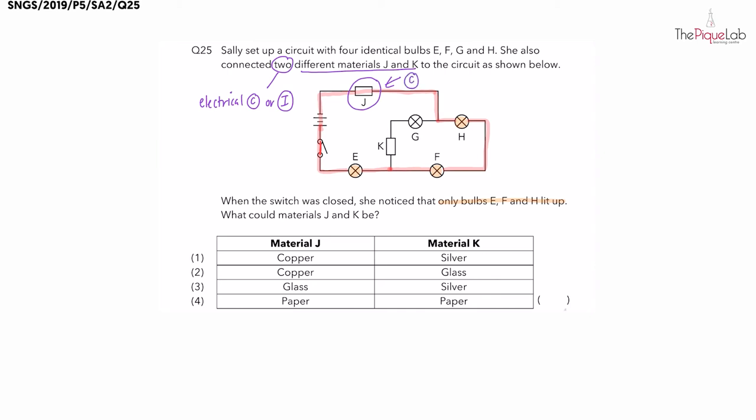What about material K then? Did any electricity flow through material K? No. So what type of material is K made of? Is it an electrical conductor or insulator? It must be an insulator since electricity did not flow through material K and bulb G did not light up.